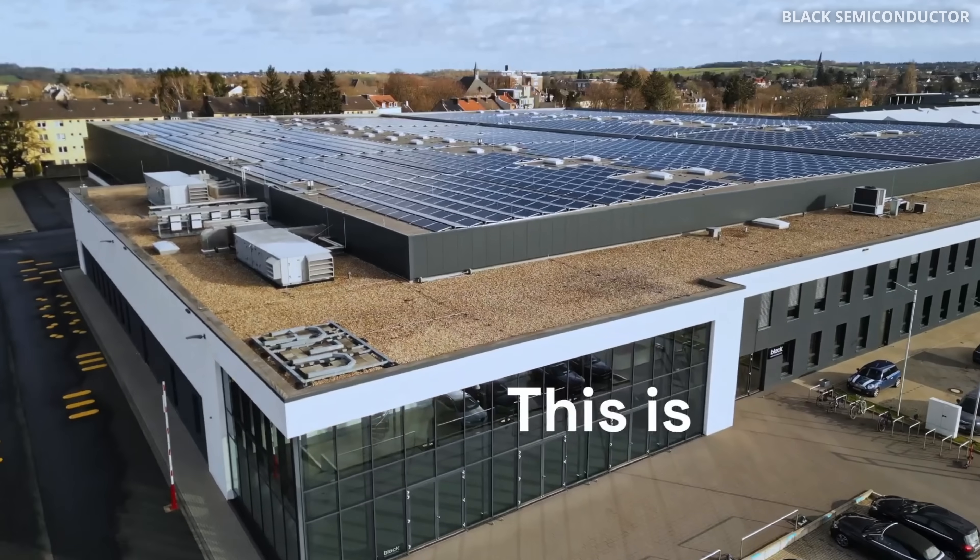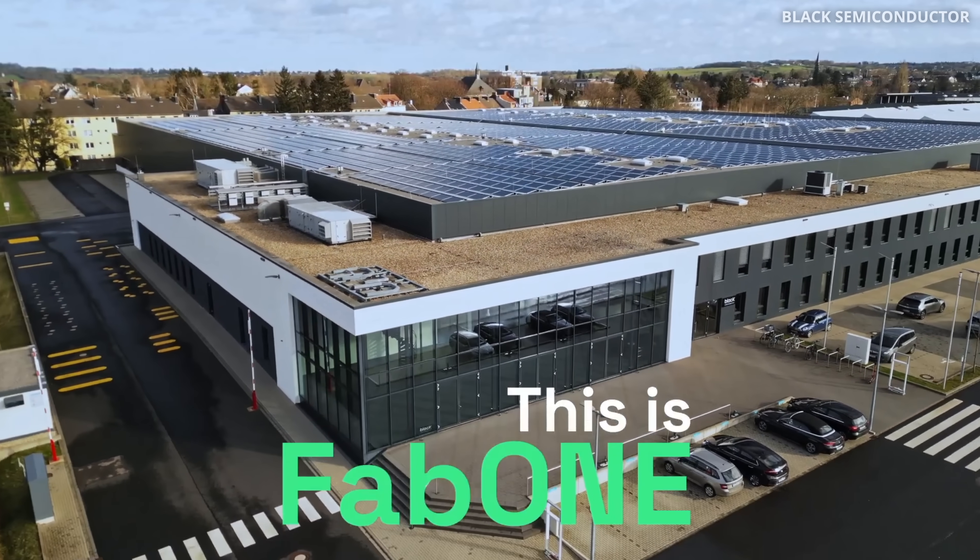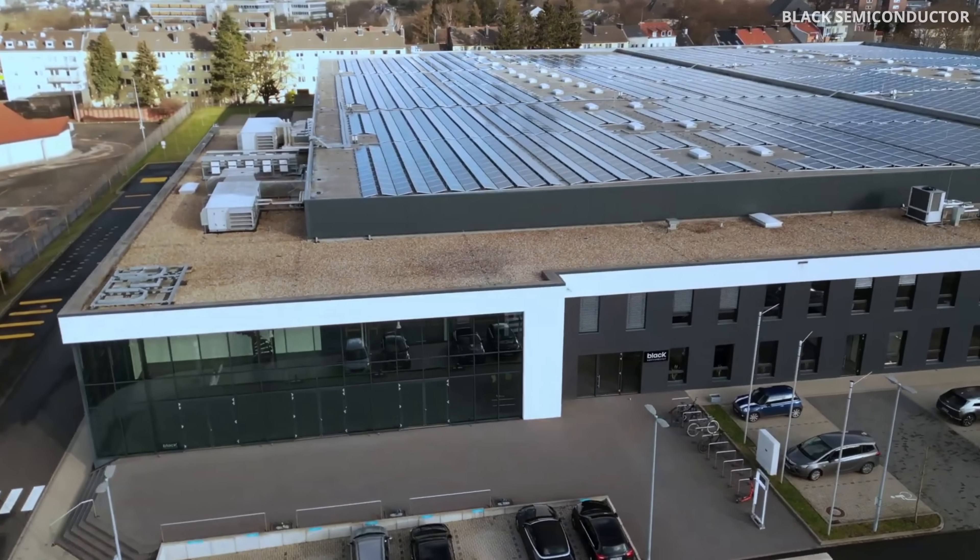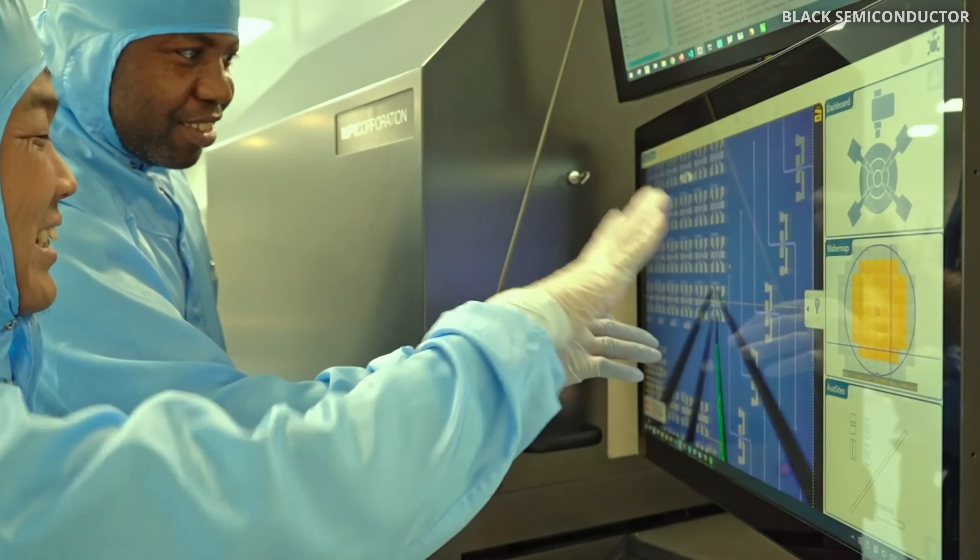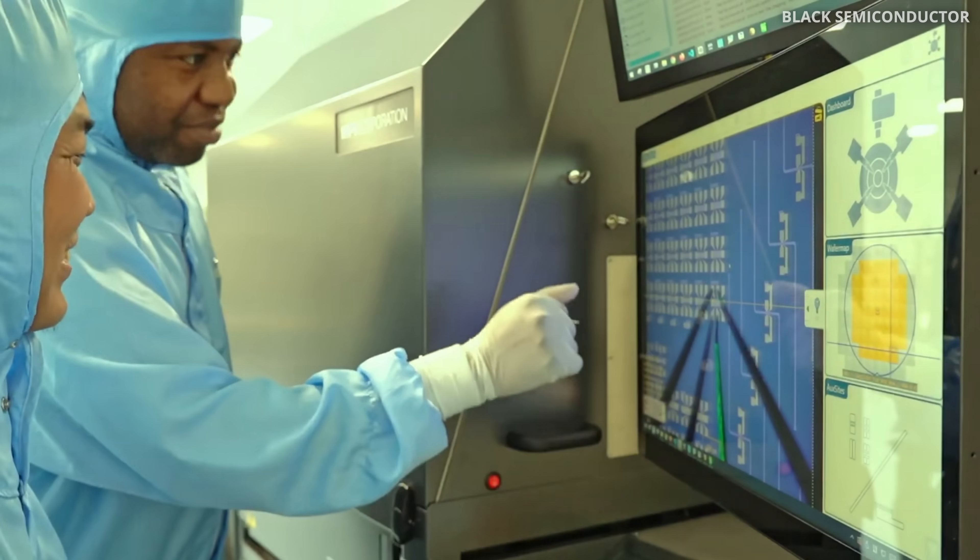But now it's finally starting to change. We see new graphene fabs being built around the world. Take Black Semiconductor, for example. They are not just designing graphene-based photonic chips, but they are building the entire infrastructure to manufacture them at scale. Their new fab, fab 1, is under construction in Germany, and they plan to begin production in 2026 and scale up to full volume by 2030.